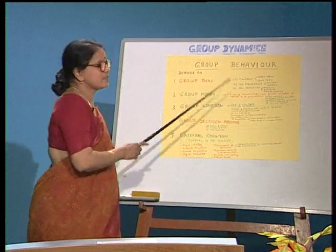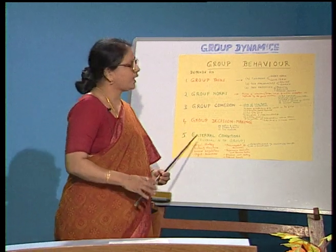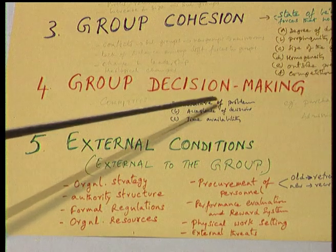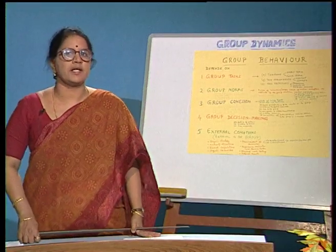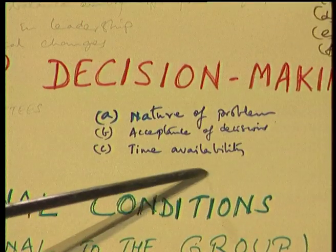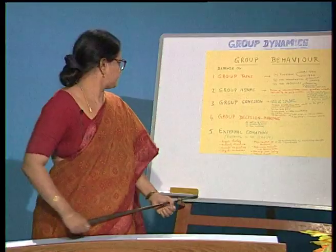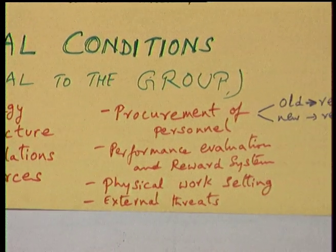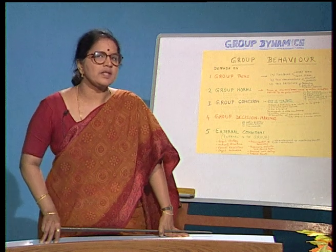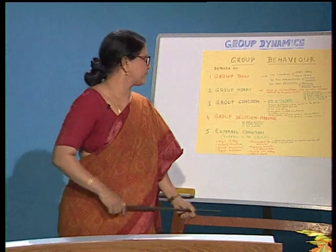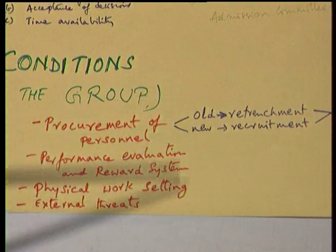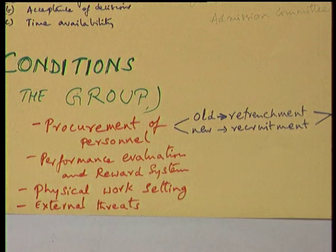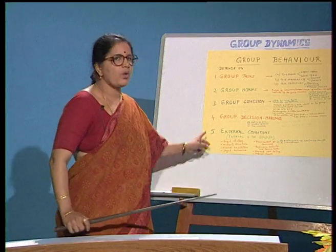Cohesion is a state of being together — it identifies the forces which make people stay together as part of the group. Coming to group decision making, it depends on the nature of the problem to be solved, whether or not the decision taken is mandatory on the members, and the time available for taking decisions. The external conditions relate to the procurement of personnel — how the retirement process takes place, for what reasons employees are retrenched, and what is the process of recruiting new employees. This affects membership composition, which in turn affects cohesion and group behavior.